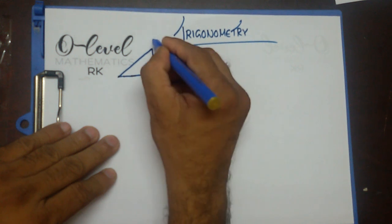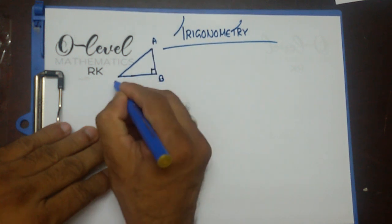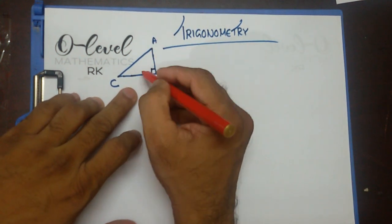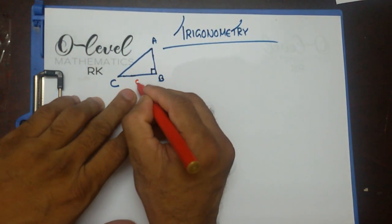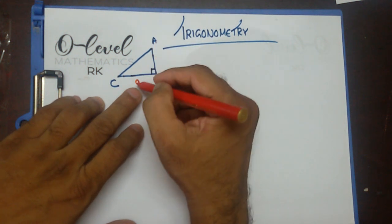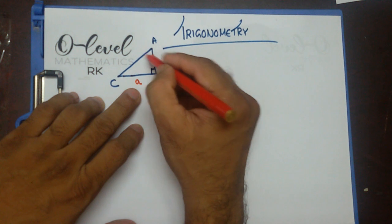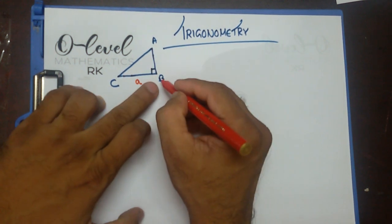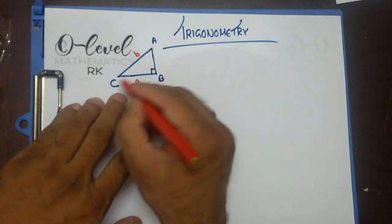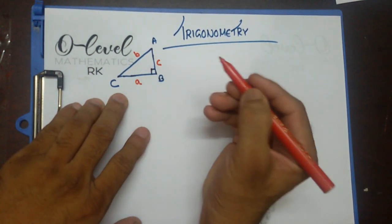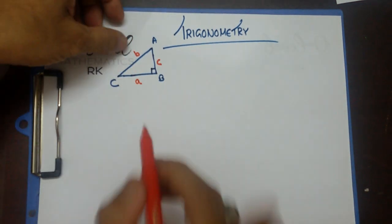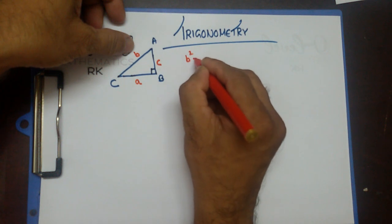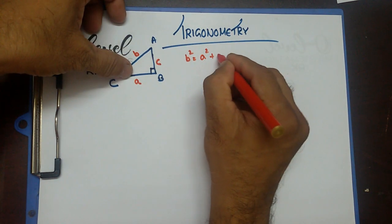That's the right angle over here — triangle ABC. The opposite side of an angle is usually represented by the small letter of that angle. So capital A is the angle, and small a is its opposite side. Similarly, small b represents the side opposite B, and small c represents the side opposite C. By the Pythagorean theorem, we know that b squared equals a squared plus c squared.